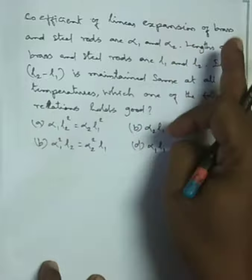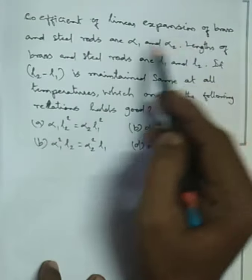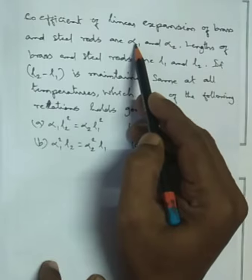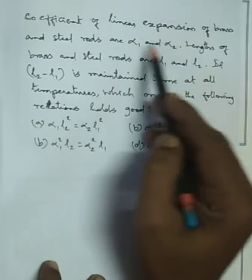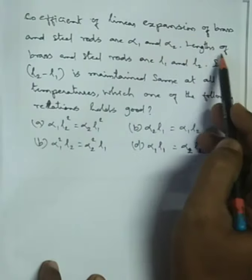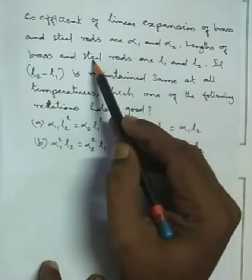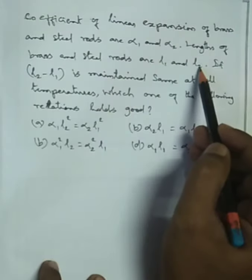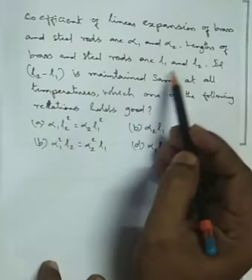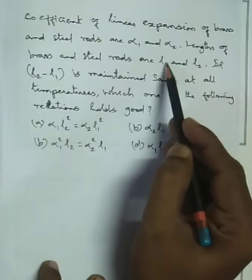Two materials are called brass and steel. Coefficient of linear expansion of brass is alpha-1, steel is alpha-2. Length of brass is L1 and steel is L2. Now, the length difference is L2 minus L1.